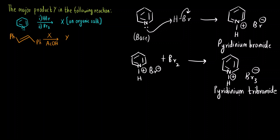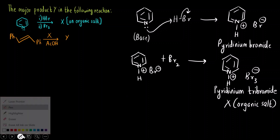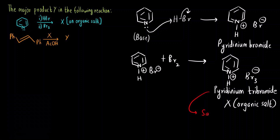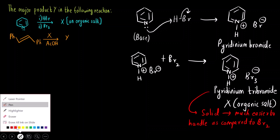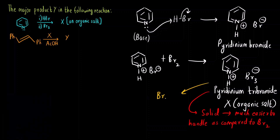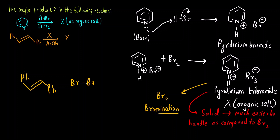Pyridinium tribromide is the organic salt X that is formed. The role of this reagent is significant — it is a solid compound, so it is much easier to handle as compared to liquid Br2. The role of pyridinium tribromide is to act as a brominating agent; from it we can generate Br2 for the bromination of the alkene.